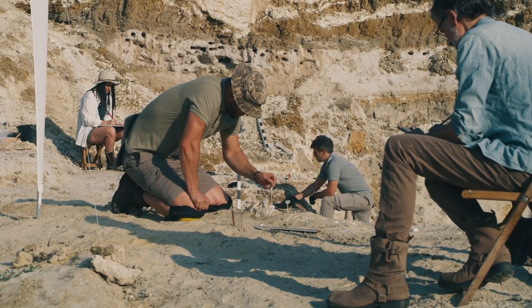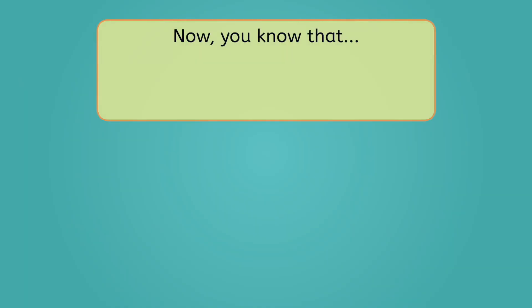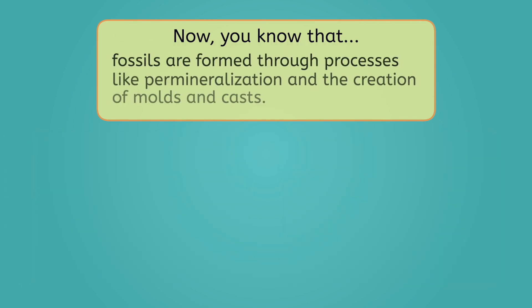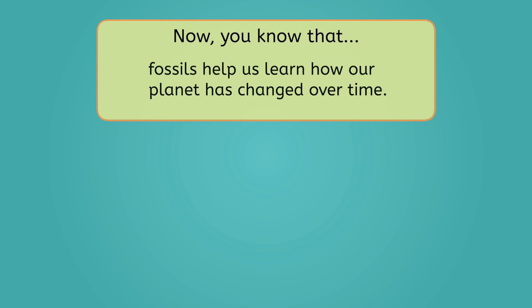Now, while we finish unearthing this specimen, let's recap what we've learned today. The main kinds of fossils are body fossils and trace fossils. Fossils are formed through processes like permineralization and the creation of molds and casts. And fossils help us learn how our planet has changed over time. Be sure to check out the practice questions and extension activities that go with this lesson to dig even deeper into the world of paleontology. And remember, in all branches of Earth science, as in life — you rock! See you next time!